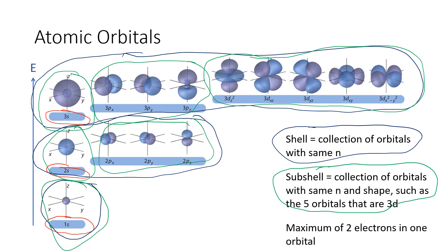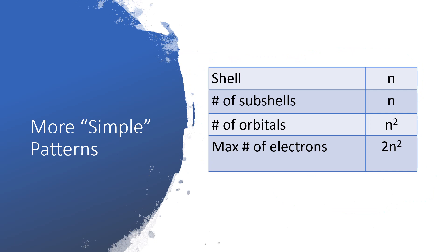And last but not least, a good guideline to keep in mind is that when we start placing electrons into these orbitals, we can put at most two electrons into any one orbital. So like in the Bohr model, some of these simple mathematical patterns fall out. If our shell is n, the number of subshells within that shell is also equal to n, the number of orbitals in that shell is n squared. And since each orbital can hold two electrons, we can put at most 2 n squared electrons into a given shell. And that exactly matches how many electrons we could put into a shell in the Bohr model.